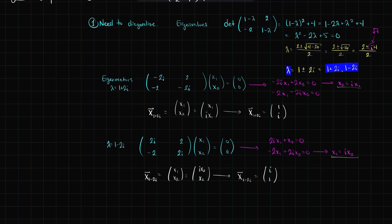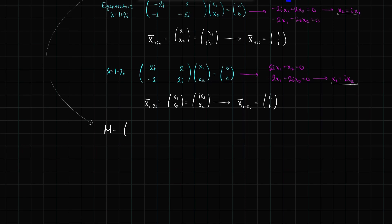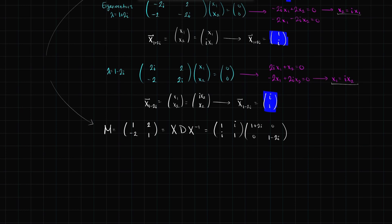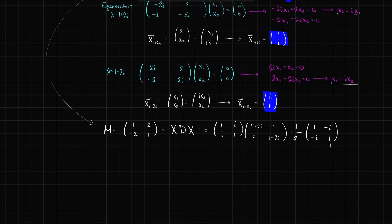Finished with eigenvalues and eigenvectors, so we can diagonalize. M = [[1,2],[-2,1]] = X D X⁻¹, where X = [[1,i],[i,1]], D = diag(1+2i, 1-2i), and X⁻¹ = (1/2)[[1,-i],[-i,1]], since ad - bc = 1 - i² = 1-(-1) = 2, swapping a,d and negating b,c.